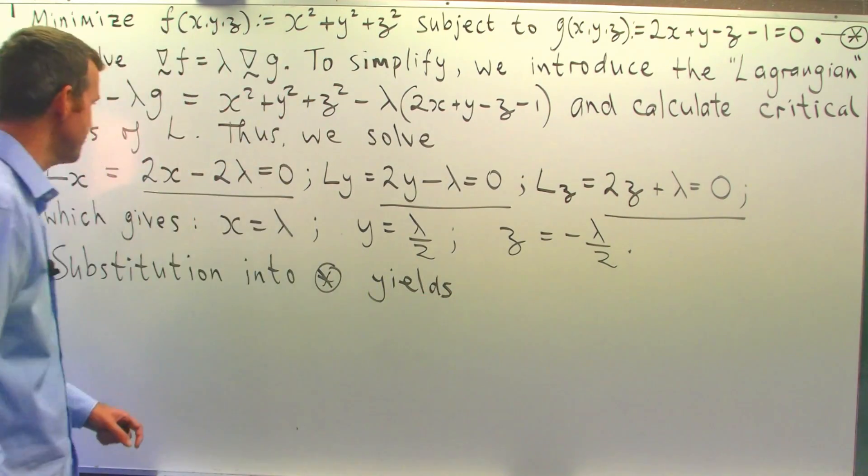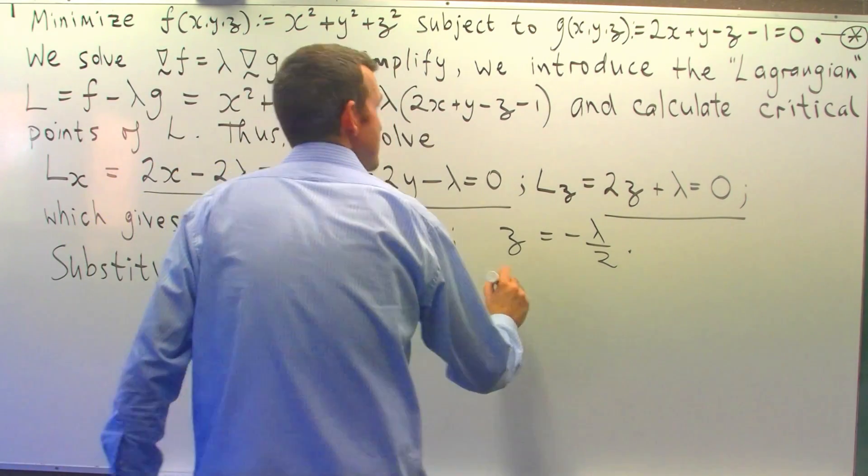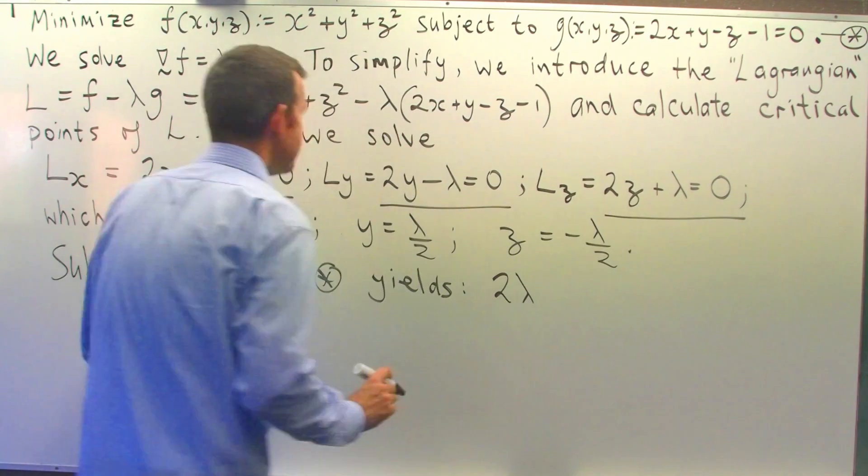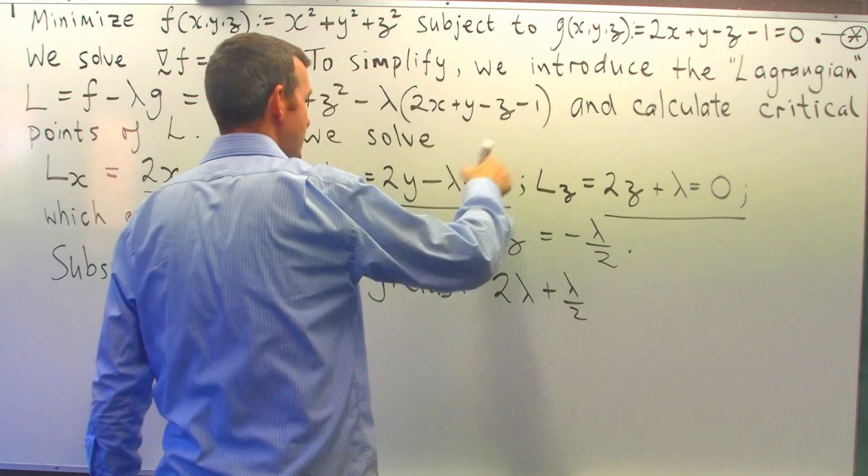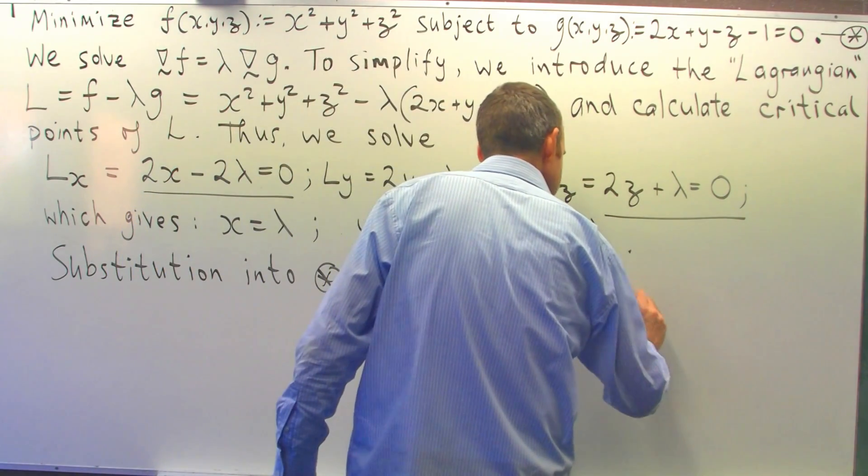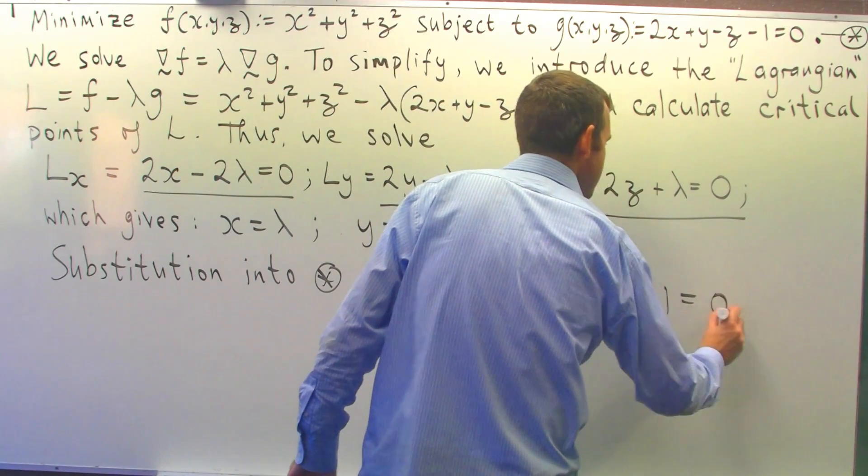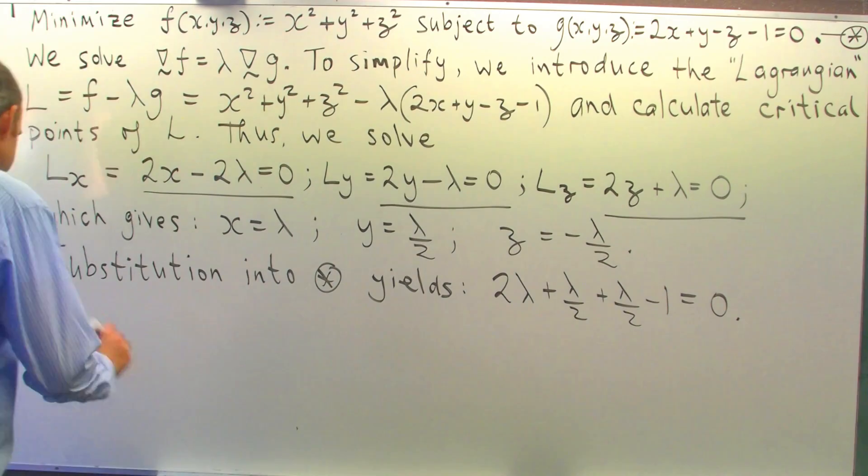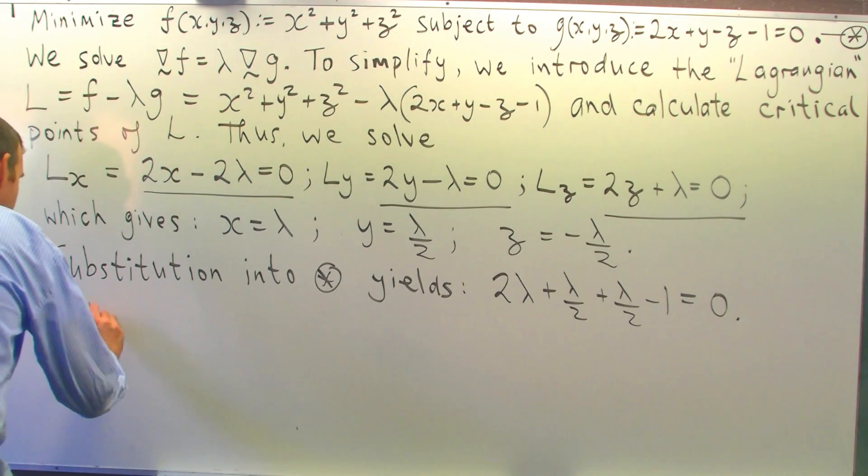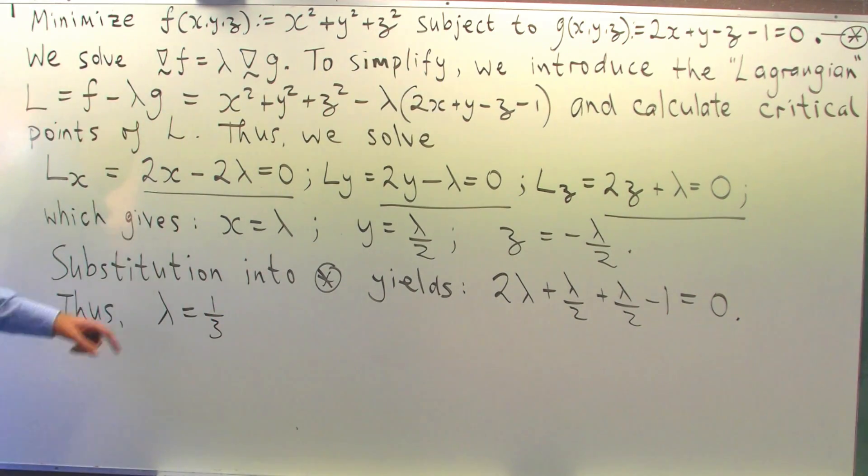So we're going to get 2 lambda plus lambda on 2 minus minus lambda on 2 minus 1 equals 0. So we're going to get 3 lambda equals 1. So lambda will equal 1 third.